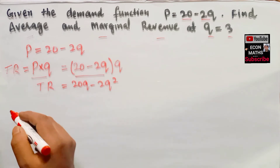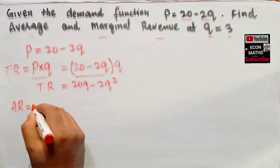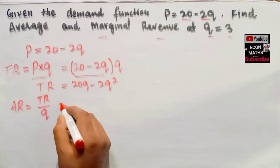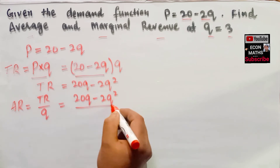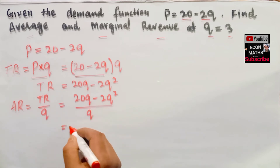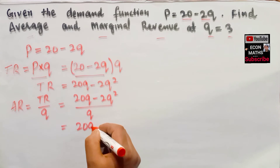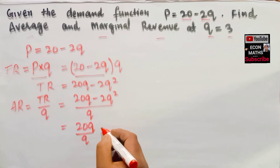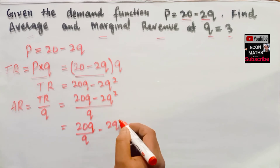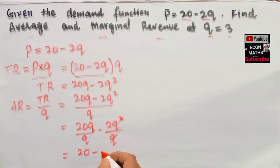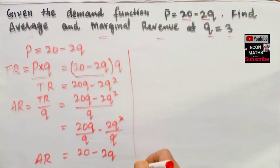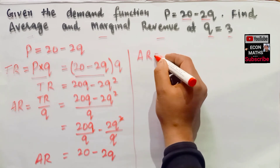To find the average revenue, as we know, average revenue is simply total revenue divided by quantity. Our total revenue function is 20Q minus 2Q squared, and we divide it by Q. Breaking this up: 20Q divided by Q minus 2Q squared divided by Q. This comes out to be 20 minus 2Q. So our average revenue is equal to 20 minus 2Q.